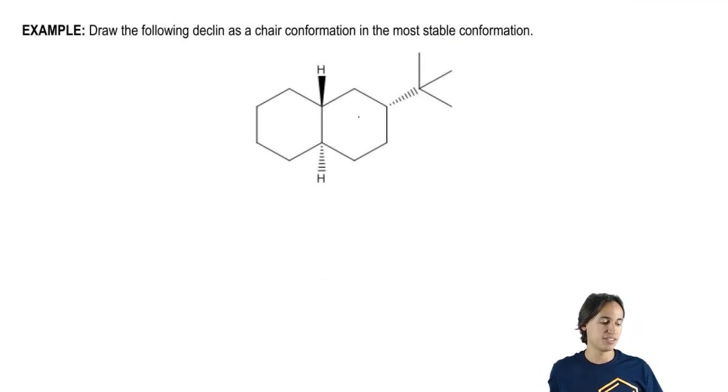So what we've got here is a decalin and notice that I've drawn the H's in a specific way, so pay attention to that. And it says, please draw the decalin as a chair conformation in the most stable conformation.